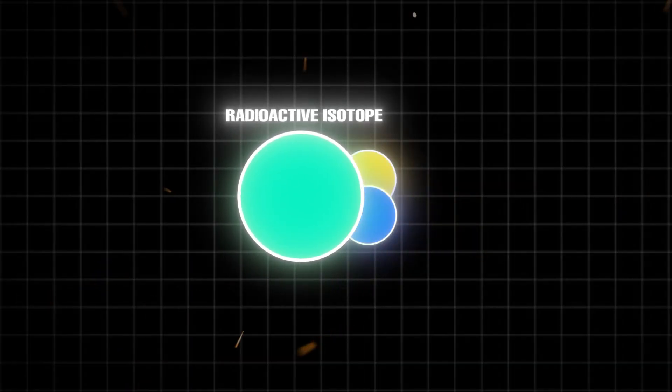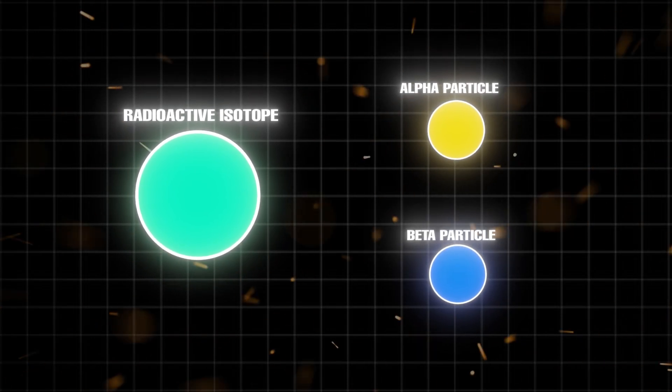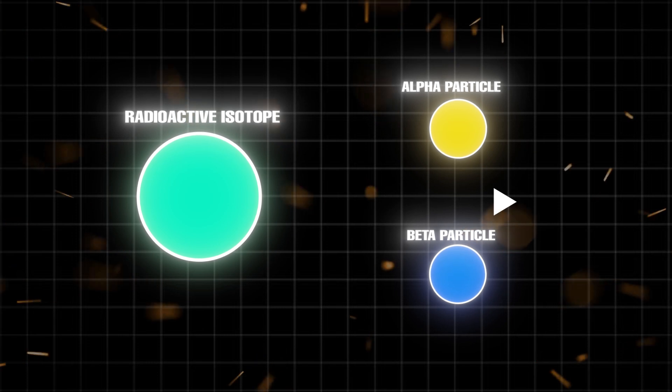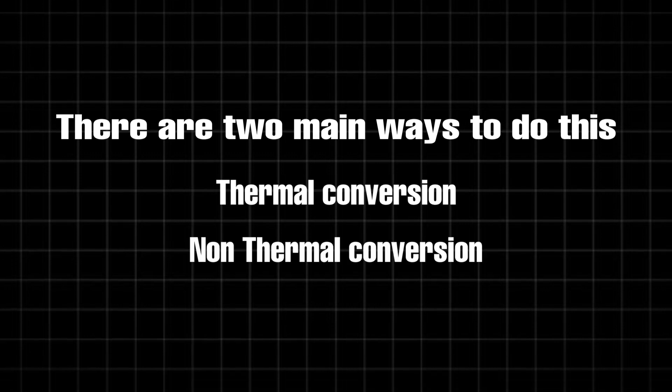When a radioactive isotope decays, it emits particles like alpha or beta particles. These particles carry energy, which can be converted into electricity. There are two main ways to do this: Thermal conversion and non-thermal conversion.